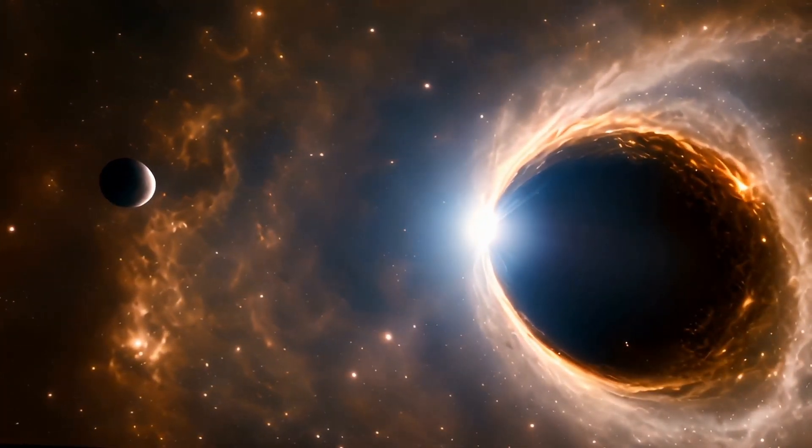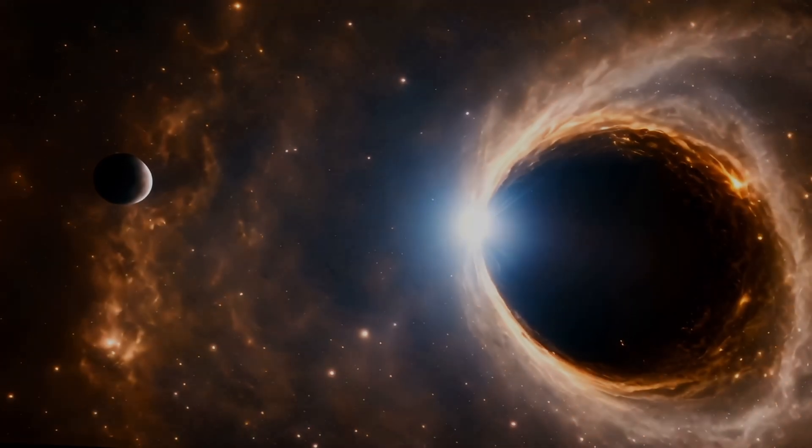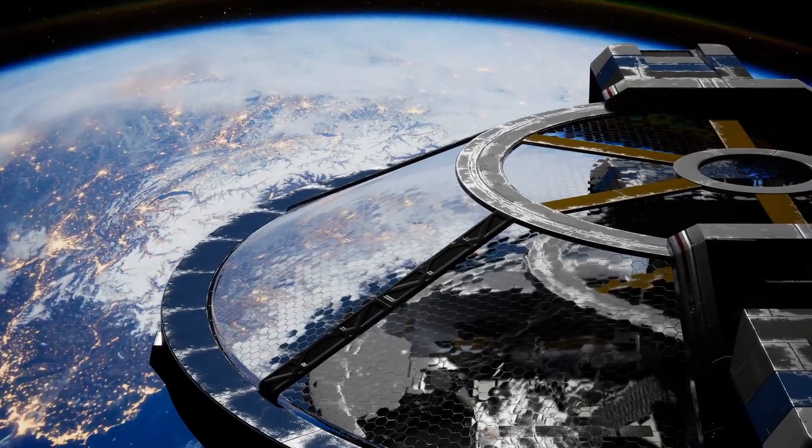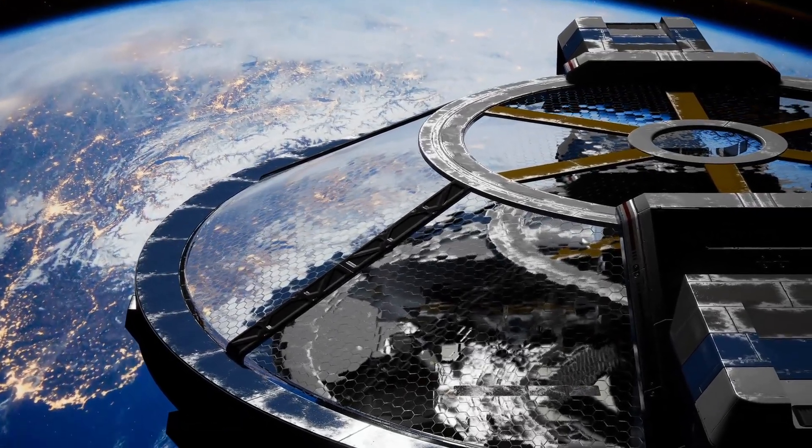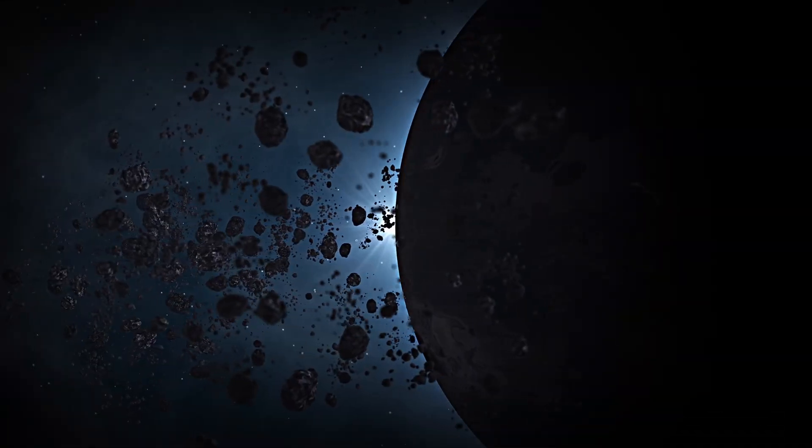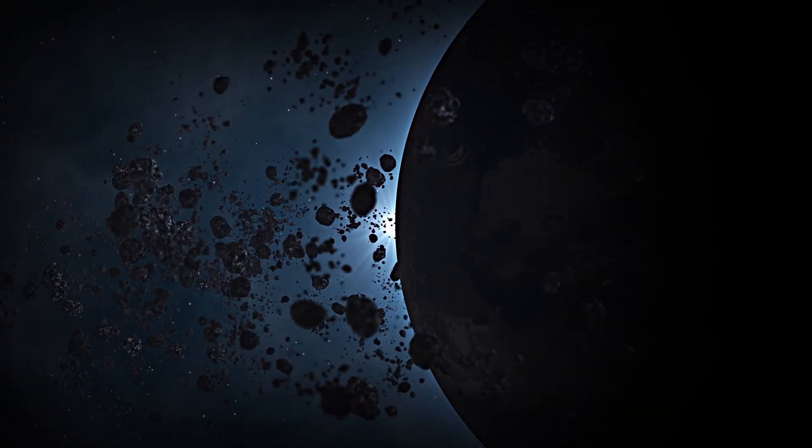The first sign of a galaxy's death is silence. The cold gas that once formed stars begins to run out, or is expelled by violent feedback from supernovae or black holes. Without new stars, the galaxy reddens. Its remaining suns grow old and dim.